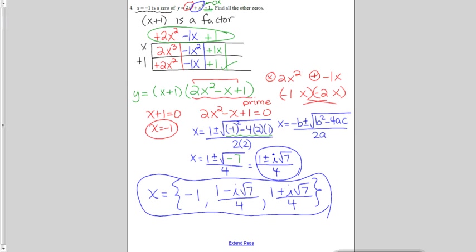Ultimately, if I give you a polynomial function and either a factor or a zero to get you started, you should be able to find the other factors or zeros by using a combination of division, factoring, and the quadratic formula.